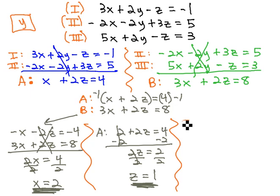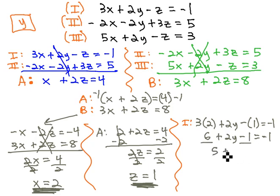3x or 3 times 2 plus 2y minus z or 1 equals negative 1. 3 times 2 is 6 plus 2y minus 1 equals negative 1. Combine like terms and 5 plus 2y equals negative 1.